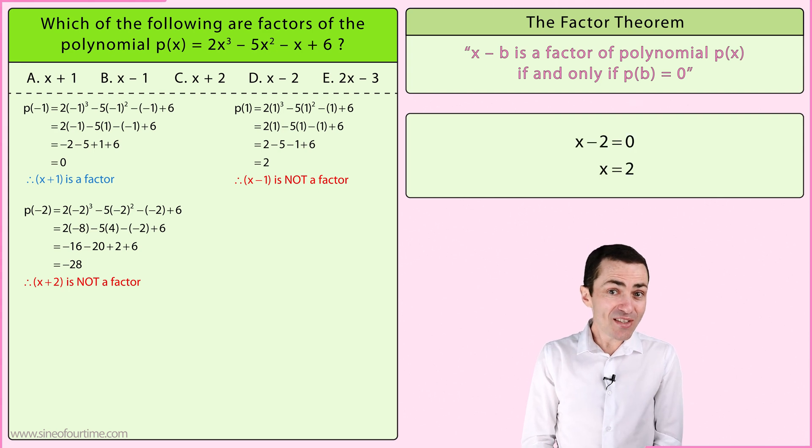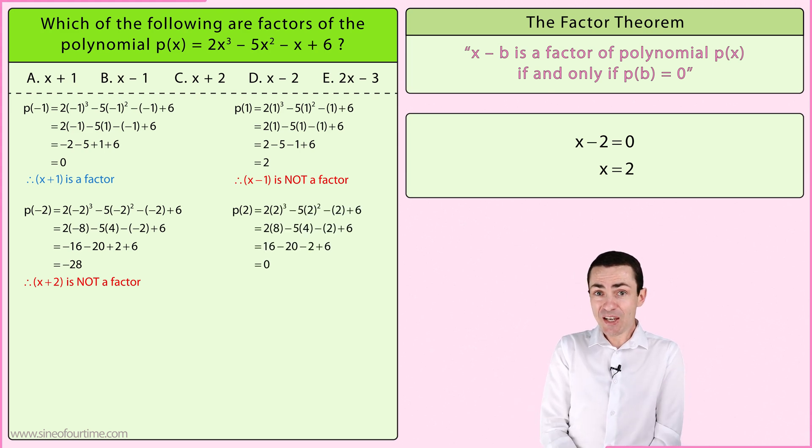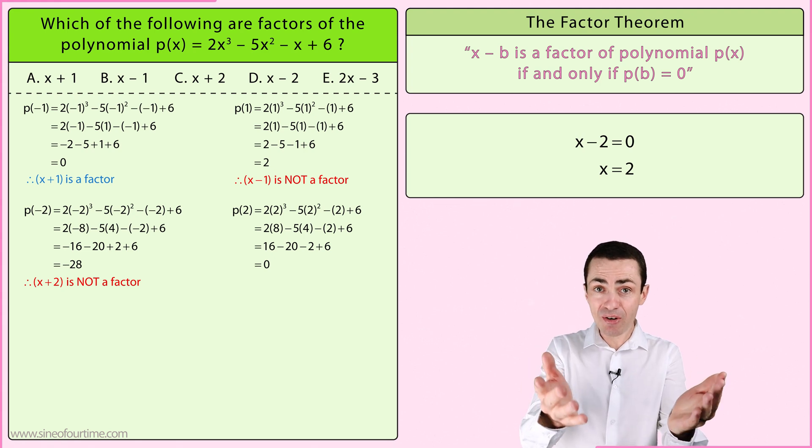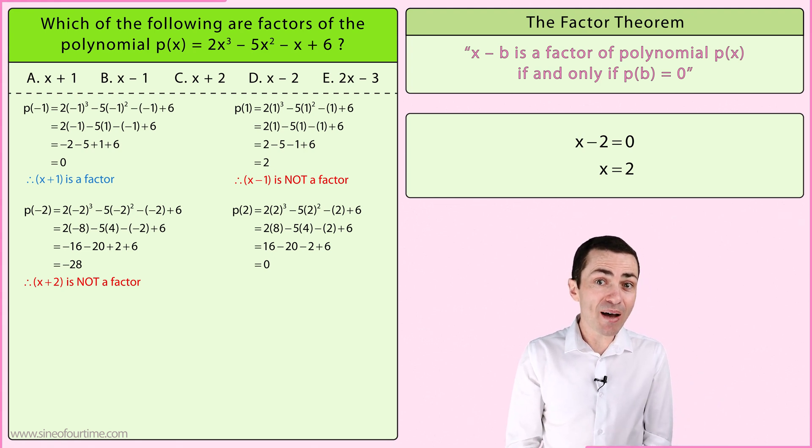And then let's test the fourth binomial by substituting positive 2 into the polynomial and simplifying. As we can see, we get a value of zero, which tells us that x minus 2 is a factor of the polynomial.